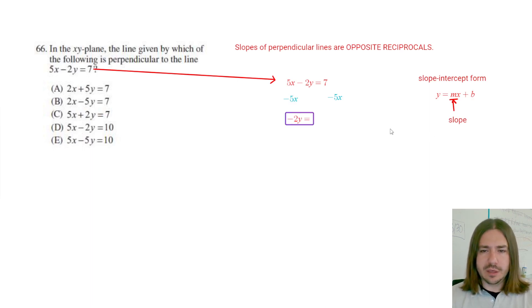So once I subtract 5x from both sides, I get negative 2y equals negative 5x plus 7. And then the last step here is going to be to divide by negative 2. So let's go ahead and show that. I want to divide both sides by negative 2.